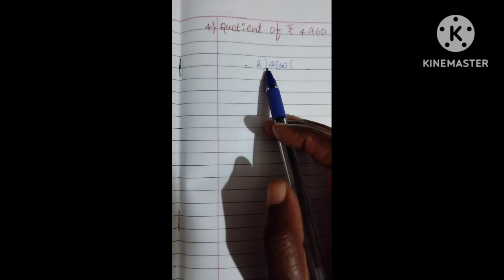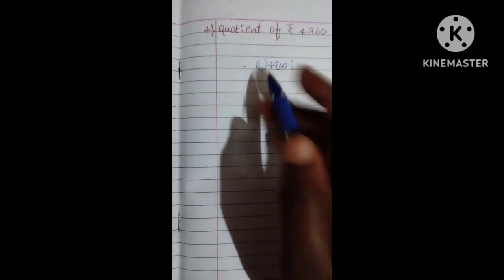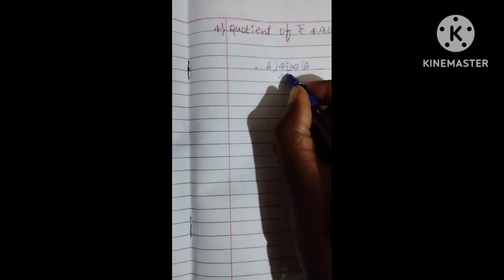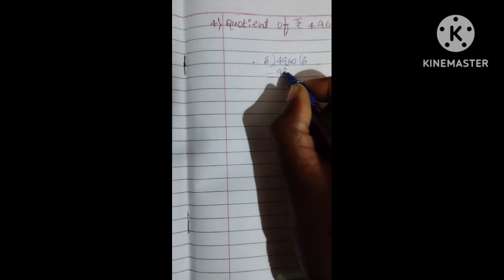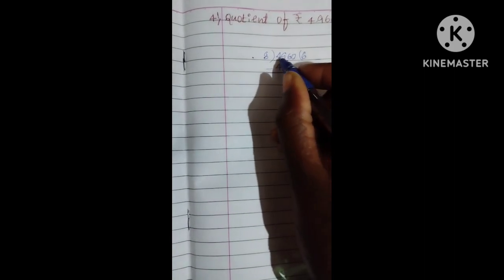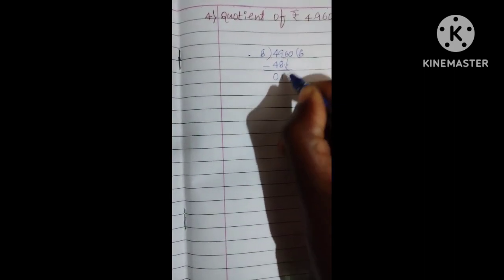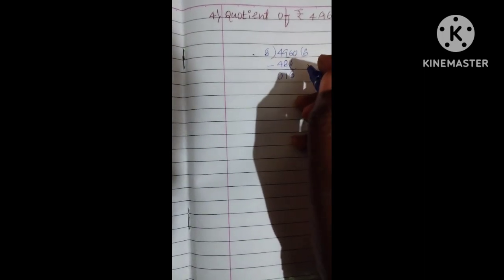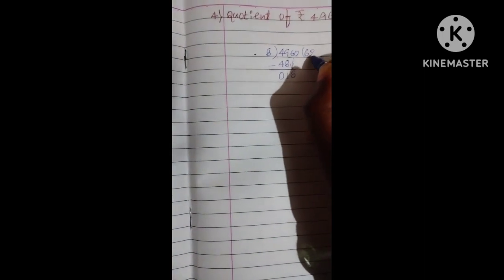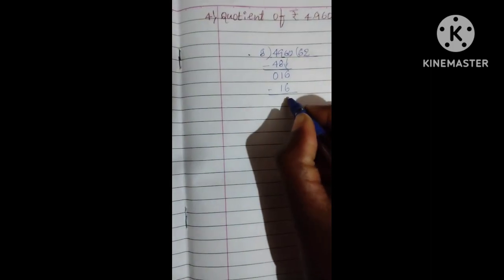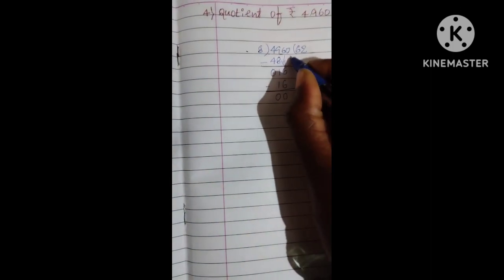8, 6 is 48. Do the minus. 9 minus 8, 1. 4 minus 4, 0. Next, we need to take down now 6. Now, 8, 2 is 16. Do the minus. 0, 0. Take down now 0.